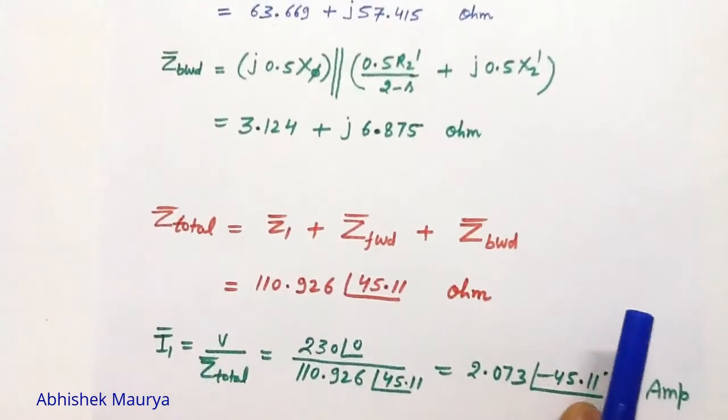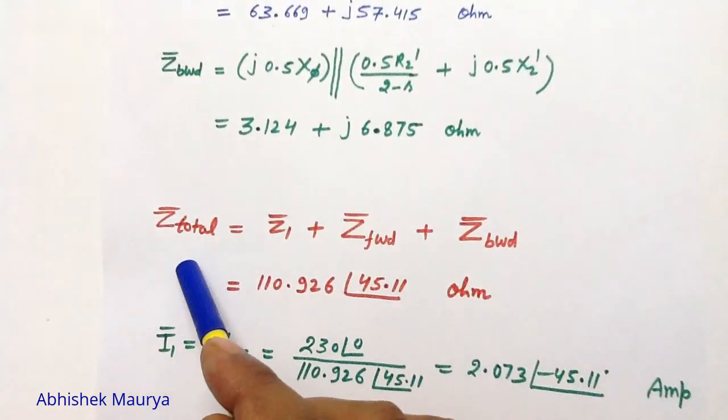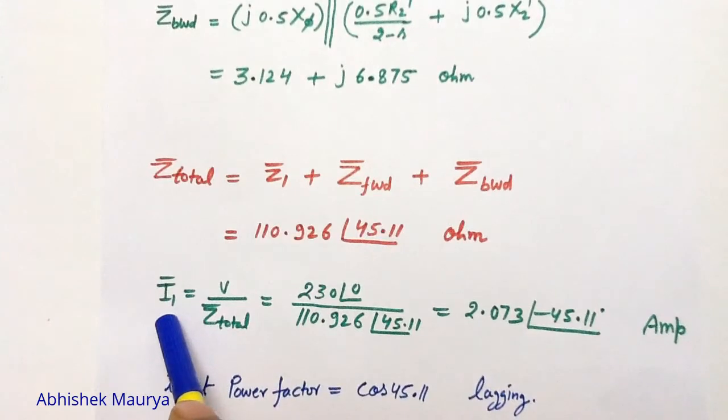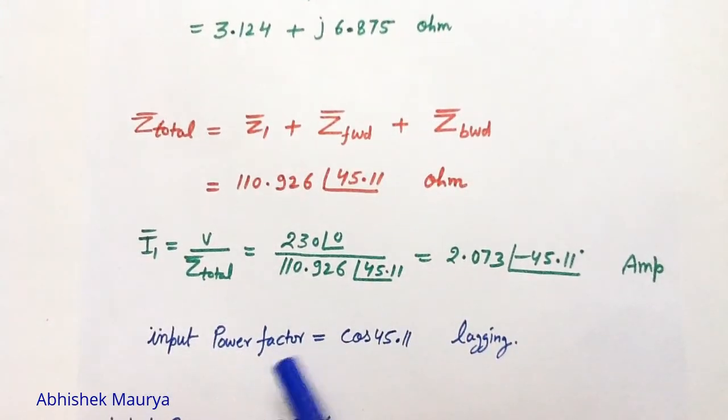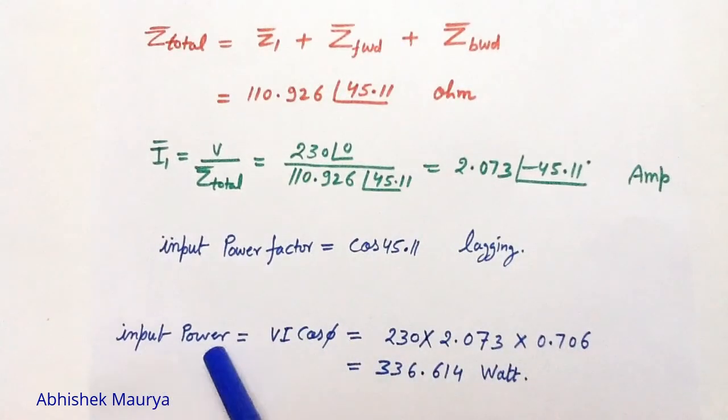Then we will calculate the total impedance. Then we can find out the input current, the input power factor, and we can find the input power by using the formula V I cos phi.